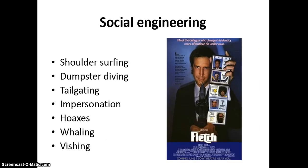In network security, we sometimes use impersonation — similar to Chevy Chase's creative impersonations in the movie Fletch — to try to get people to give us their usernames and passwords over the phone. A bunch of different types of social engineering are shown on the left-hand side: shoulder surfing, dumpster diving, tailgating, impersonation, and hoaxes. You need to know all of these for the exam.